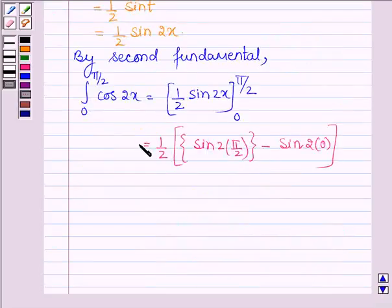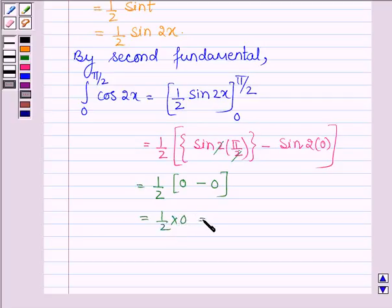This equals 1/2 [sin π - sin 0]. Sin π equals 0 and sin 0 is also 0, so we have 1/2 × 0 which equals 0.